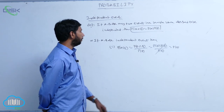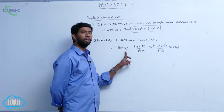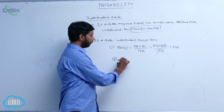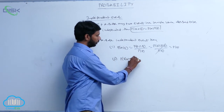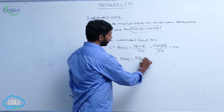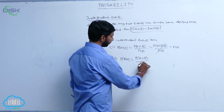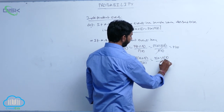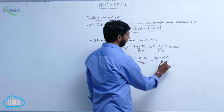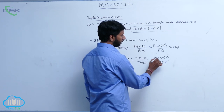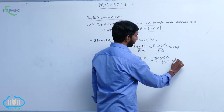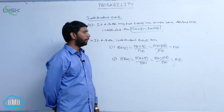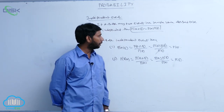If A, B are independent events, P of B given A is equal to P of A intersection B by P of A, which equals P of A into P of B by P of A. Here P of A gets cancelled, so it is equal to P of B. Therefore, P of B given A is equal to P of B and P of A given B is equal to P of A.